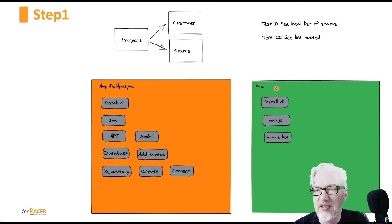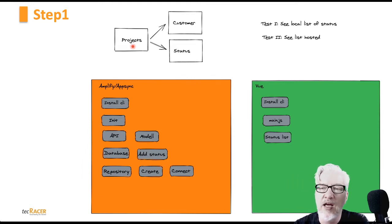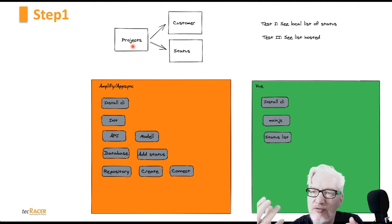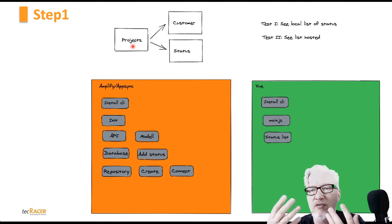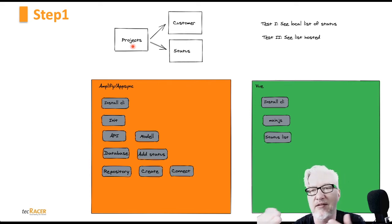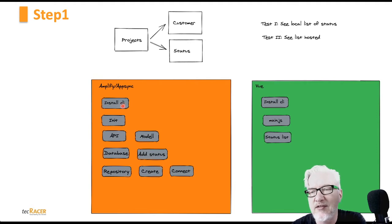The application itself is really easy. We just have a project management software which consists of projects. The projects have a customer and a status, and these are linked together. What we will do today — you can see in this sheet — we will install the CLI, initialize, add API, model, and so on. For Vue, we will also do some installation.